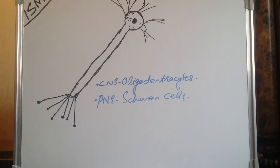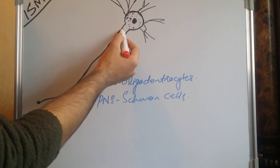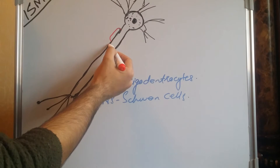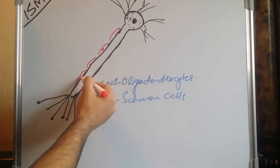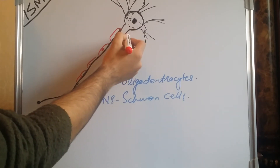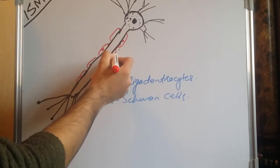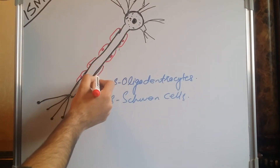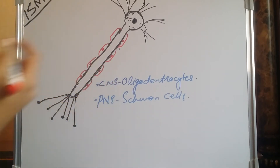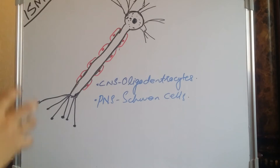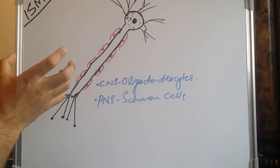Suppose this neuron is myelinated — it means that it has a special type of cell around the axon. These cells produce a lipid layer around the axon which makes it less conductive and more insulative. They secrete a layer of lipids along the whole axon, providing an insulating structure. This is what we call myelination, and now this neuron is a myelinated neuron.